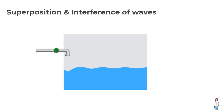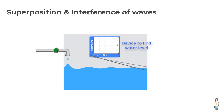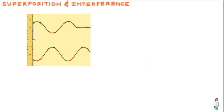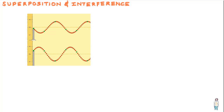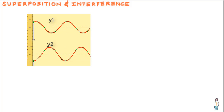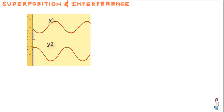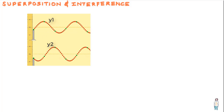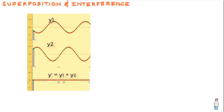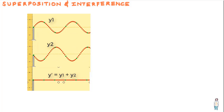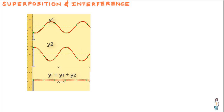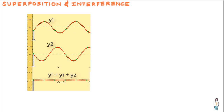We learn here the principle of superposition of waves and what really is interference of waves. Say you create two waves traveling simultaneously along the same string, and let y1 and y2 be the displacements that would have happened if each wave had traveled alone. Then the displacement of the string when these waves overlap is found by taking the algebraic sum: y' is equal to y1 plus y2. Overlapping waves can be added algebraically to produce a resultant wave.